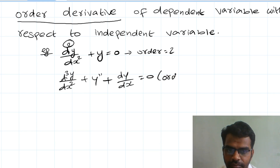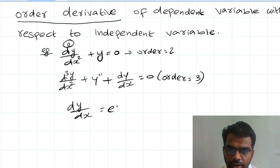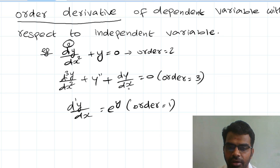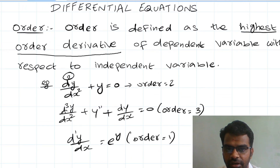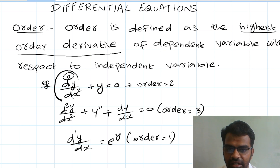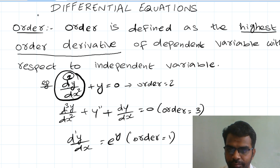For example, order equal to 3. This is dy/dx equal to e^y. The highest power value — the order is equal to 1. The order is defined as the highest order derivative, highest power value of the dependent variable with respect to the independent variable.